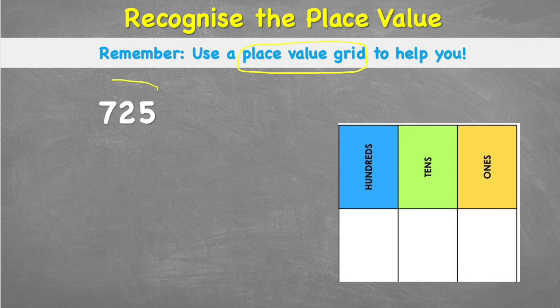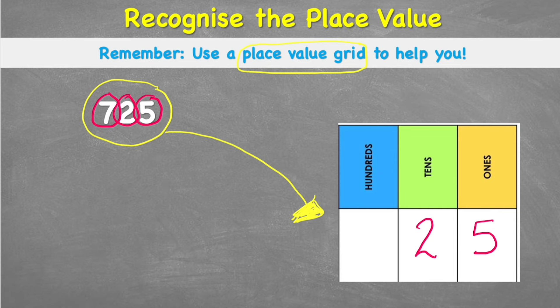We use the place value grid to help us understand what value. So let's put our 725 inside our place value grid to see what value each of these digits holds. So our 5 would go inside our 1s column, our 2 would go inside our 10s column, and our 7 will go inside our 100s column.